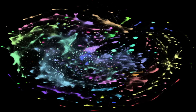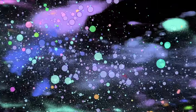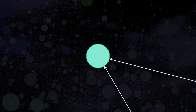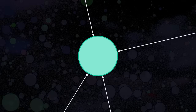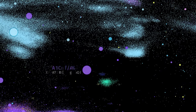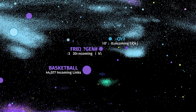So now we understand the colors and layout of the graph, but what about the different sizes of each circle? The size of each circle, or node, is proportional to the amount of incoming links to its corresponding article. In other words, the more times an article is linked to by other articles, the bigger its node will be. For example, the article for basketball is referenced by 44,000 other articles, so it's going to be bigger than the articles for free agent and golf, which are linked to fewer times.